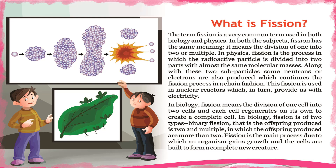Fission is used in nuclear reactors, which in turn provide us with electricity. In biology, fission means the division of one cell into two cells, and each cell regenerates on its own to create a complete cell. In biology, fission is of two types: binary fission, where the offspring produced is two, and multiple fission, where the offspring produced are more than two. Fission is the process by which an organism gains growth and cells are built to form a complete new creature.